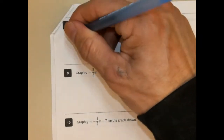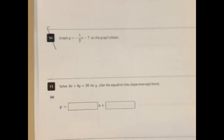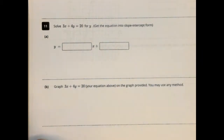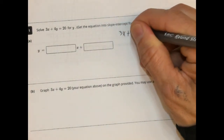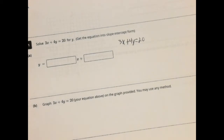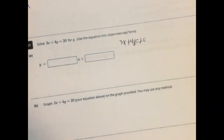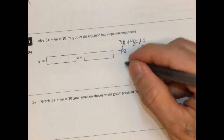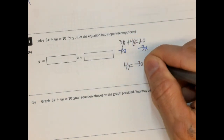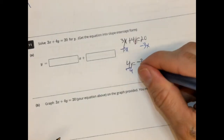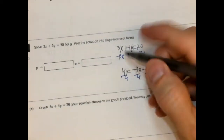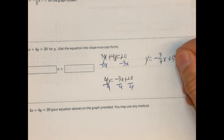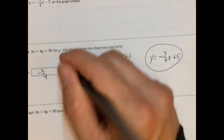Problems 8, 9, and 10 we can't do — we did a ton of that on Delta Math, so I'm not concerned about that. Solve for y — so we get y by itself; it's a literal equation. 3x plus 4y equals 20. We're solving for y, so we're going to subtract 3x from both sides. That cancels, giving us 4y equals negative 3x plus 20. Divide by 4, so y equals negative 3 fourths x plus 5.